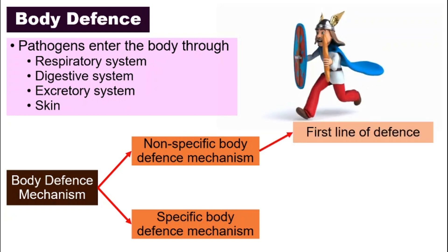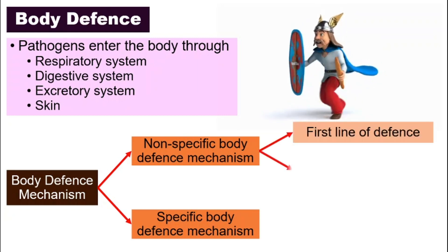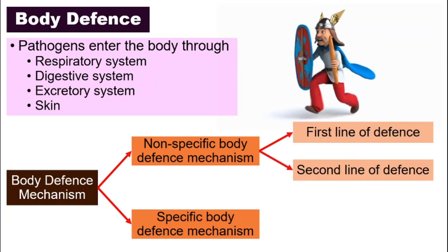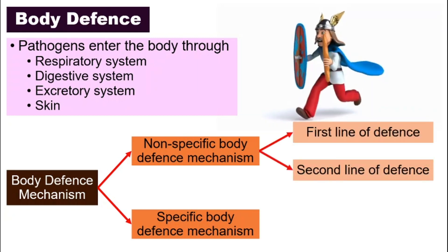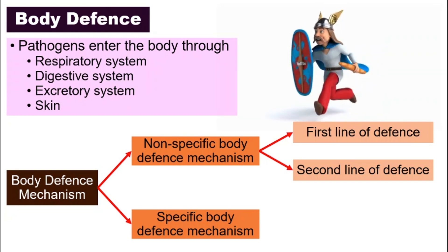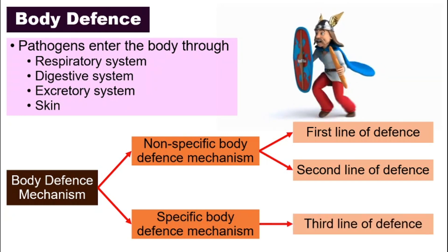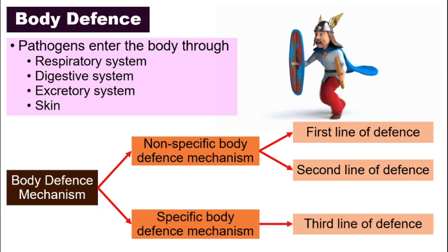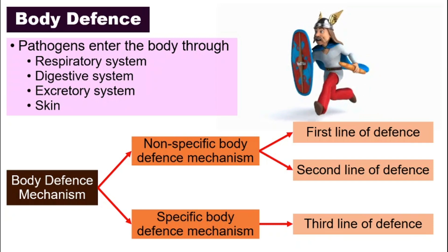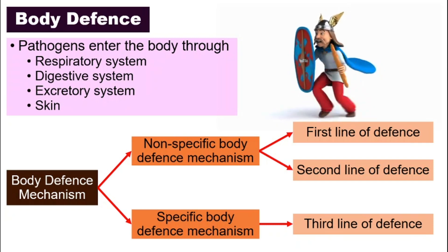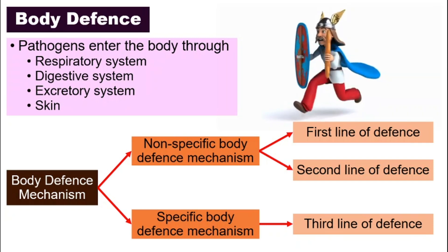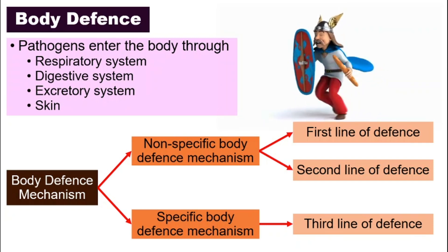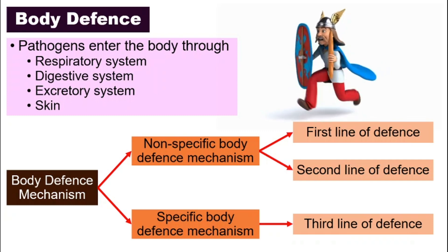The first line and the second line of defense belong to the non-specific body defense mechanism, whereas the third line of defense is the specific body defense mechanism. We will look at all this first, second, and third line one by one.